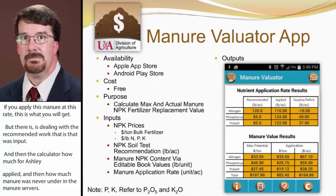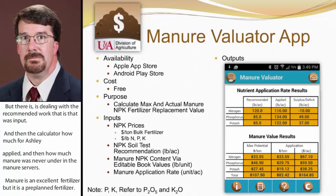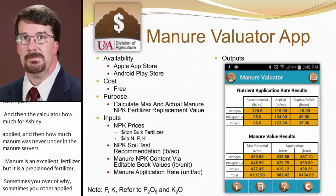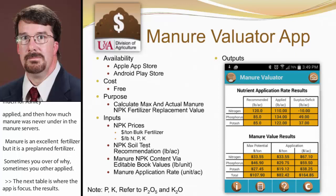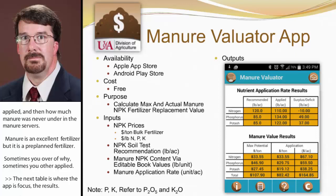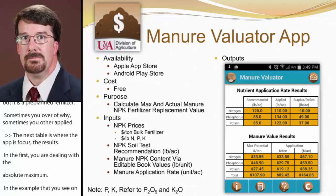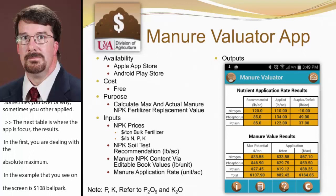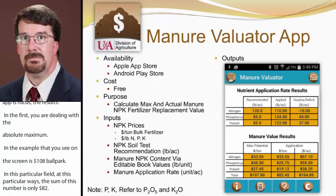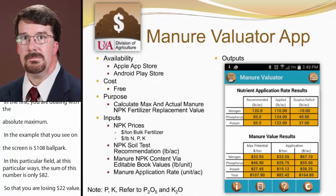The next table gets at where the app was really focused: manure value results. The first column shows the absolute maximum potential value of the manure — that's simply the price of N, P, and K times the content, totaled up. In the example on screen, that's about $108. But when applied to this particular field at this particular rate, the sum is actually only about $82 — so you're losing about $22 of value. What that's saying is the manure may be more valuable to a neighbor who needs the phosphorus than to the landowner who's generating it and already has plenty. It also calculates the application rate in dollars per acre.